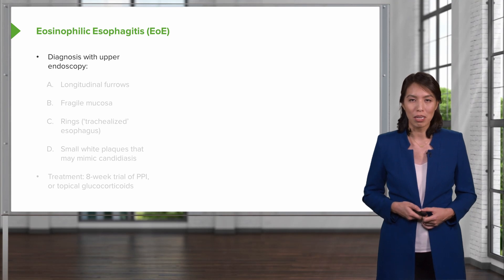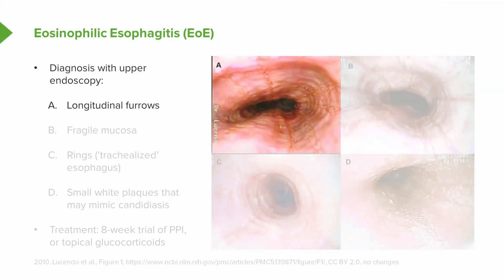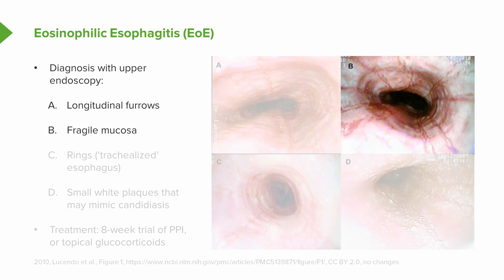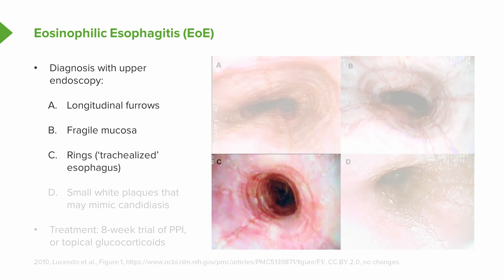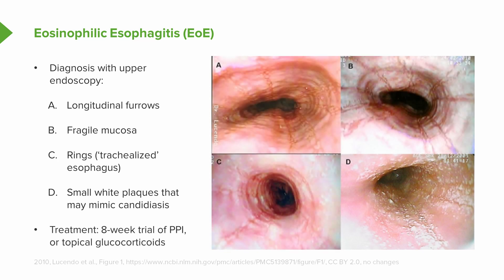The diagnosis of eosinophilic esophagitis is made by upper endoscopy. Typical features include longitudinal furrows along the length of the esophagus, fragile mucosa, and a trachealized esophagus — rings around the esophagus resembling the appearance of the trachea. You may also see small white plaques that may look like candidiasis. These patients should be treated with an eight-week trial of a proton pump inhibitor or topical glucocorticoids.